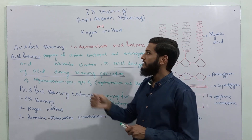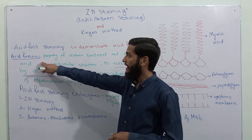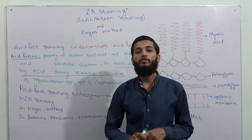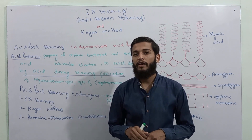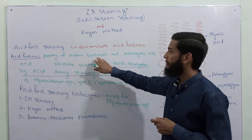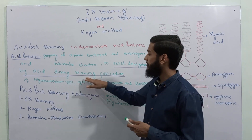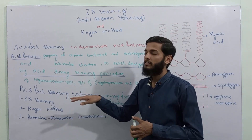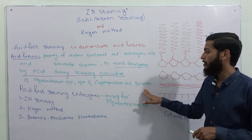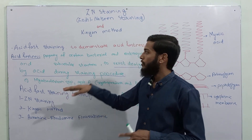And Mycobacterium leprae. Just remember, both of these methods are types of acid fast staining techniques. But first we will understand what acid fastness is and why we need to perform acid fast staining techniques. Acid fastness is the resistance to decolorization by acids. It is shown by certain bacteria, eukaryotic cells, and subcellular structures. This resistance to decolorization is most commonly shown by Mycobacterium species. It is also shown by cysts of Cryptosporidium and Isospora, both of which are protozoa.